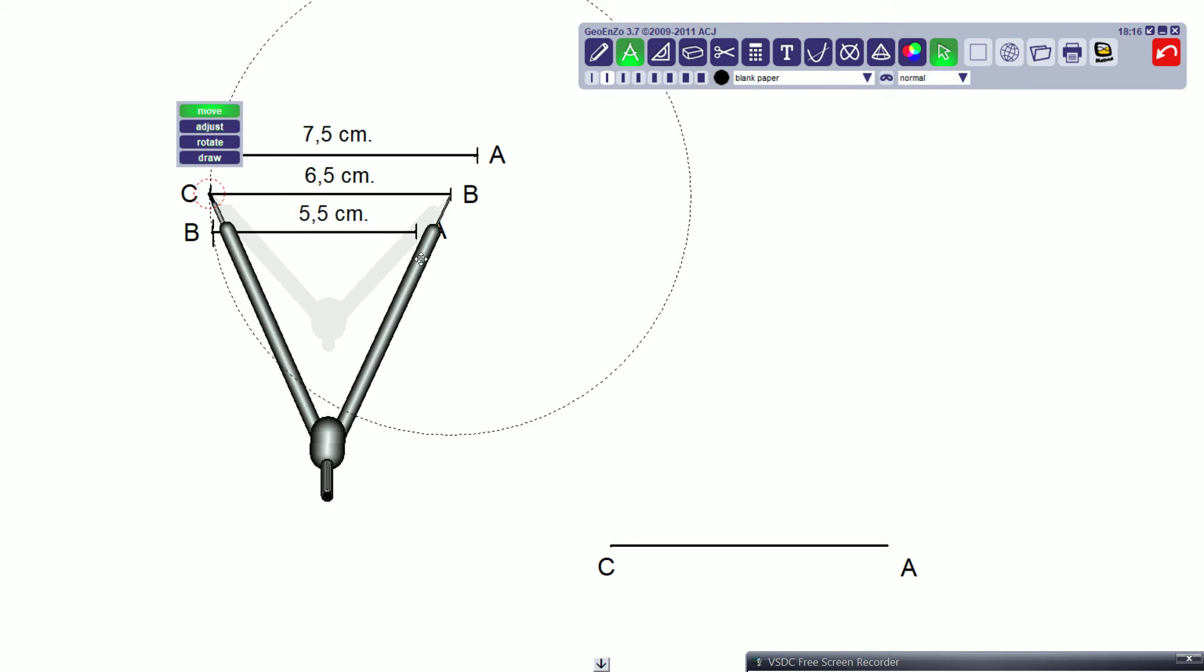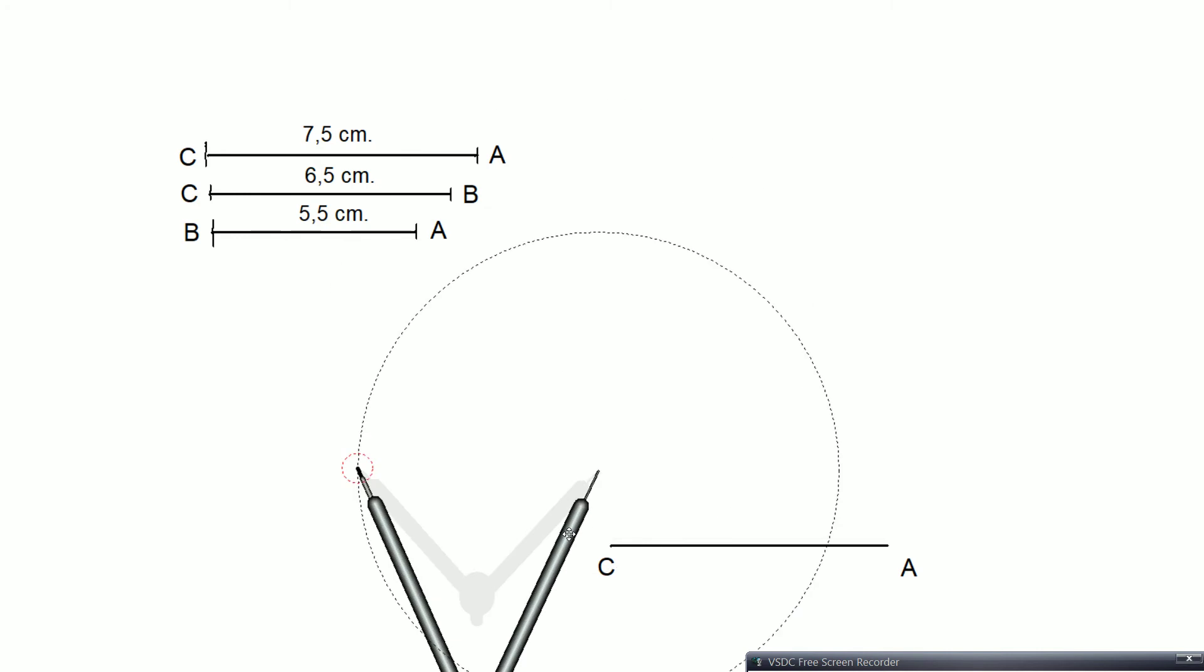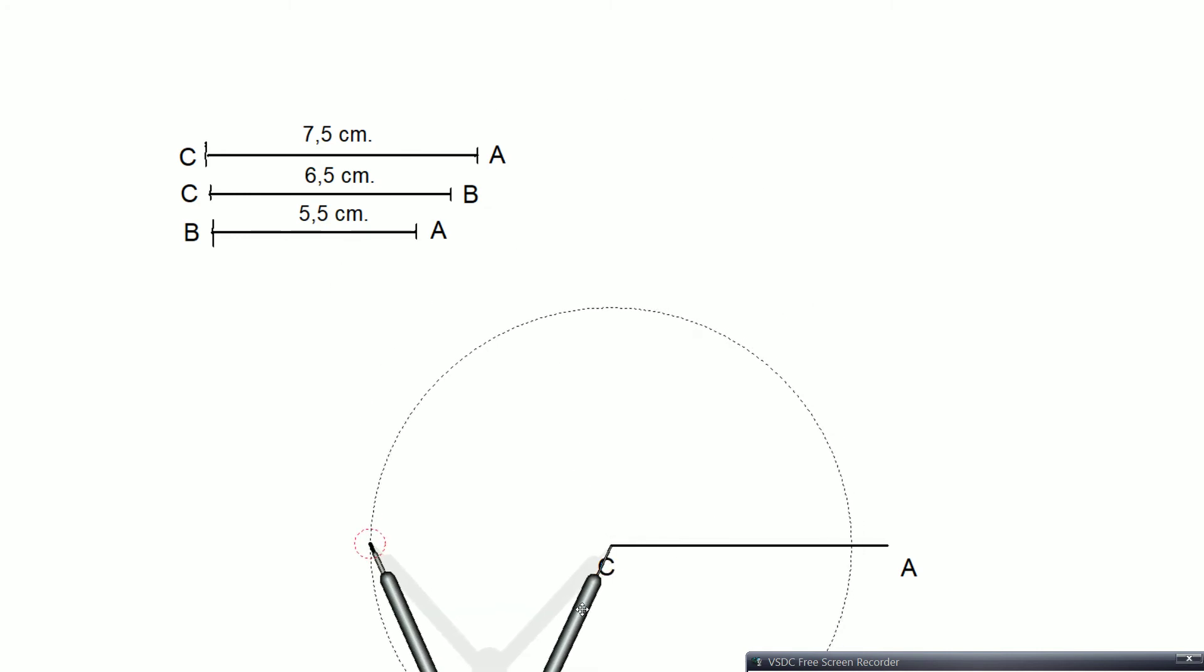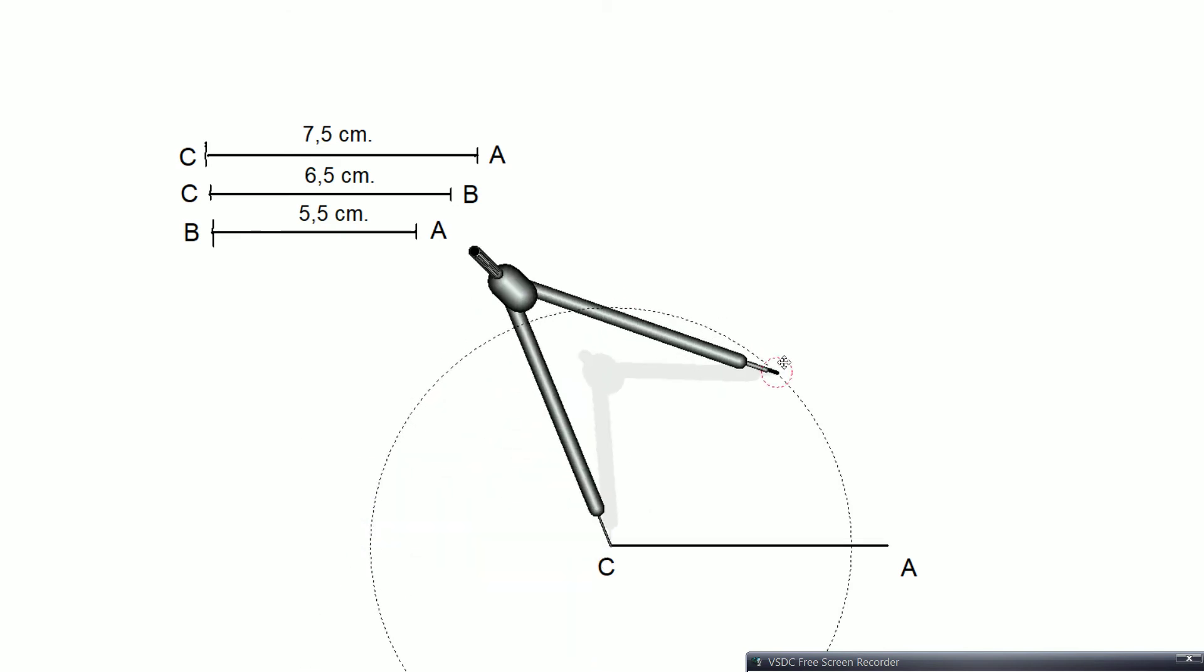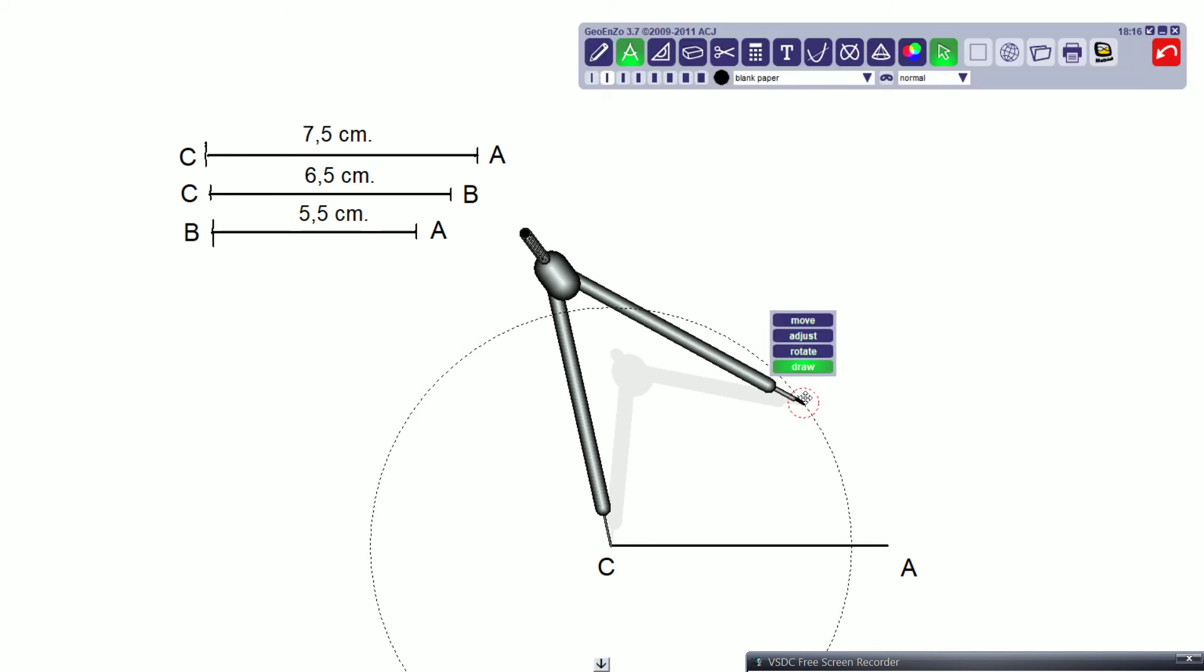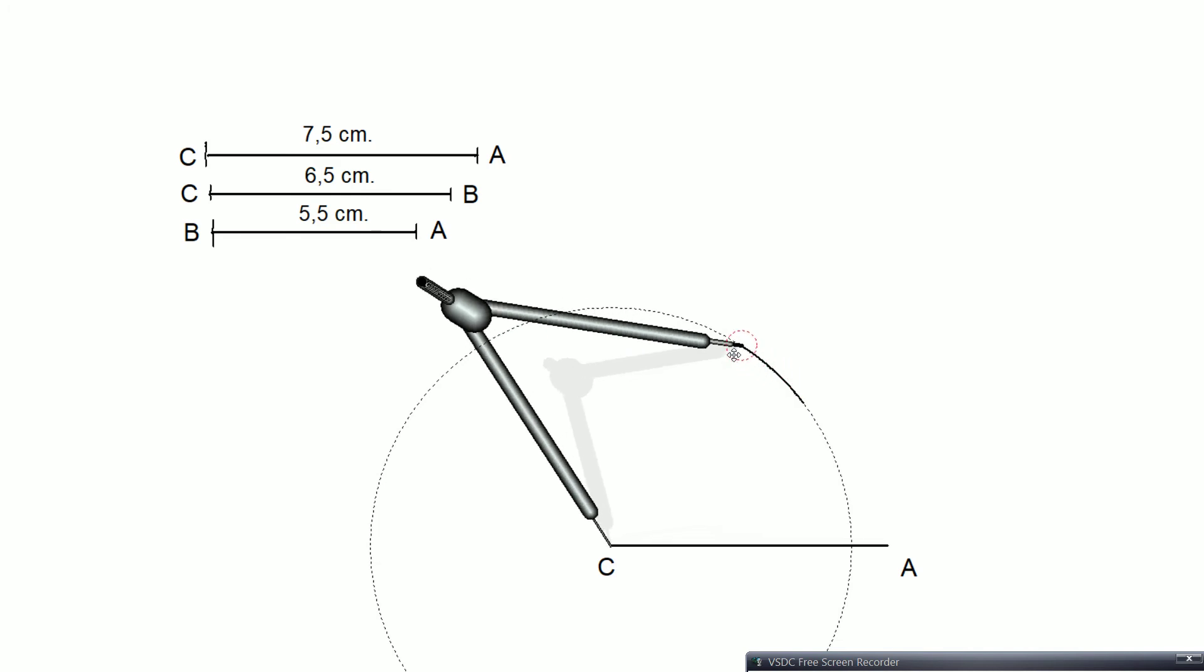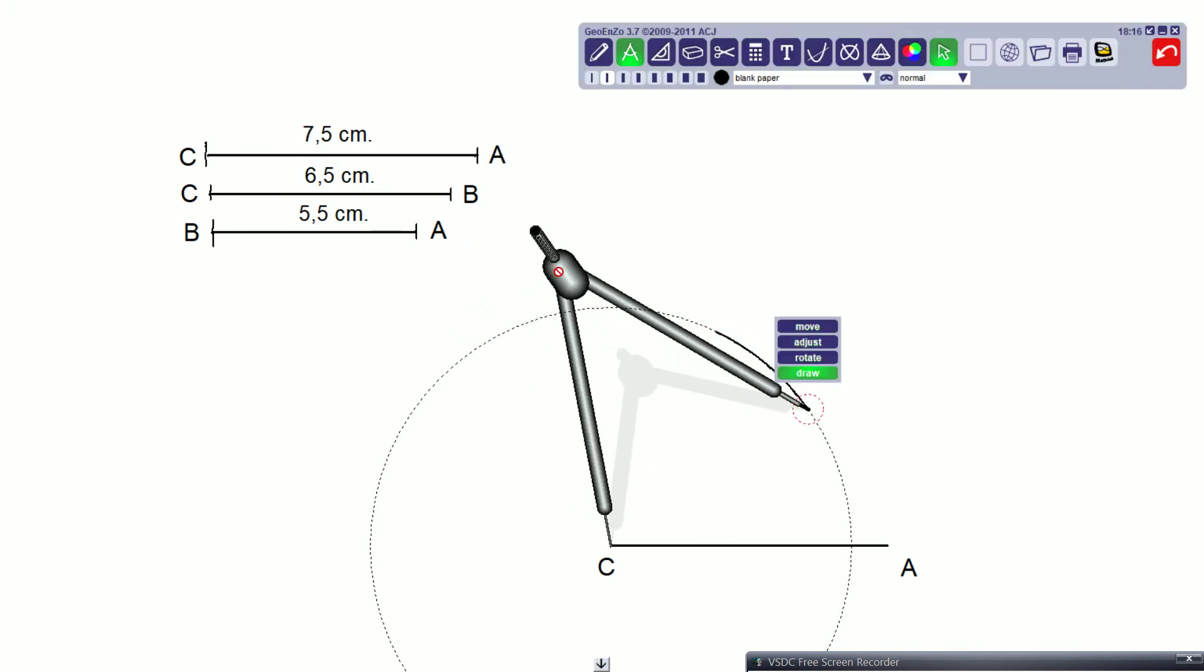Okay, so when I have the measure I go to the C vertex of the triangle. I'm going to rotate it a bit and now I'm going to draw an arc with that measure.